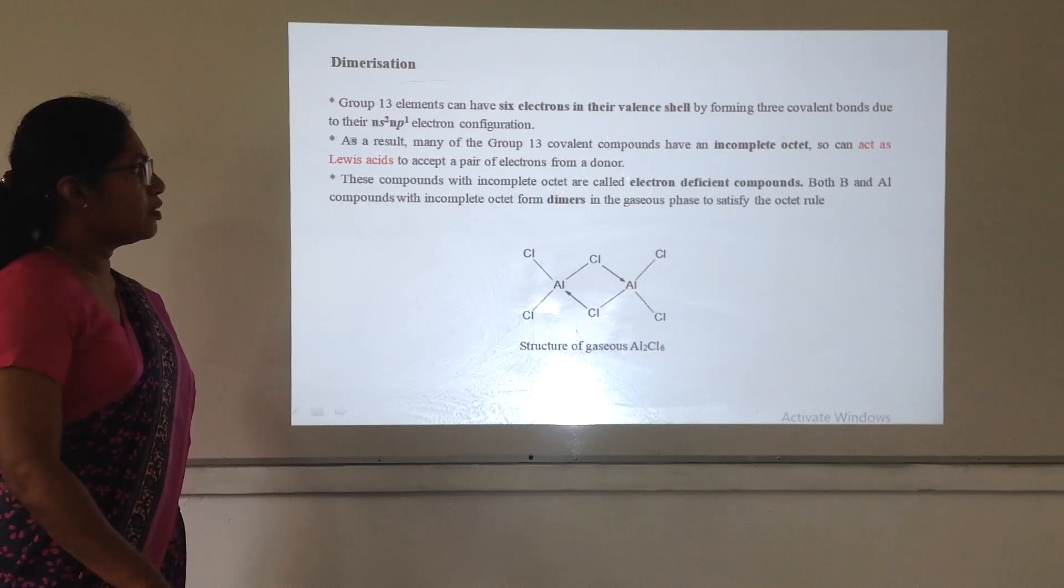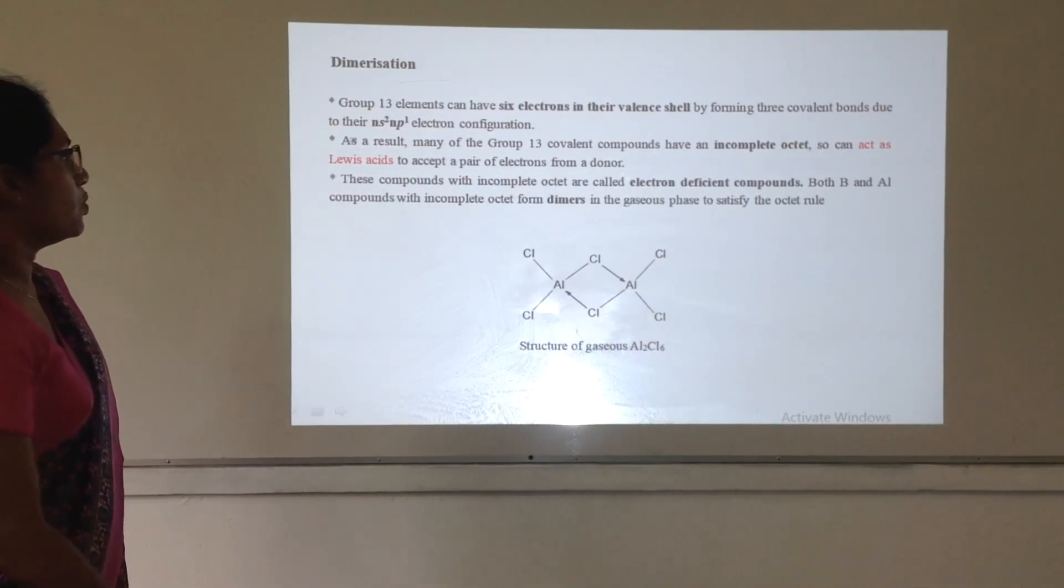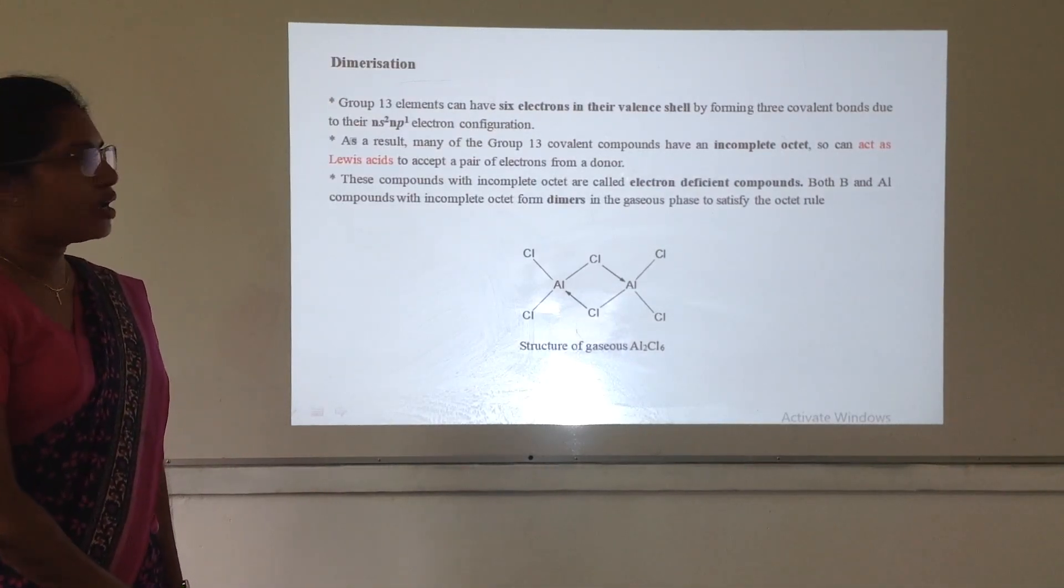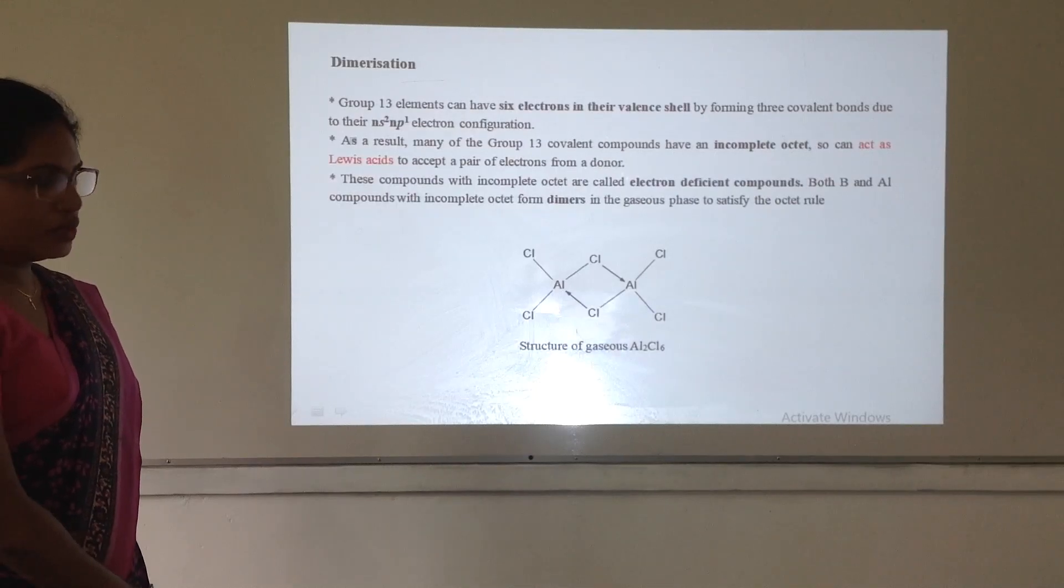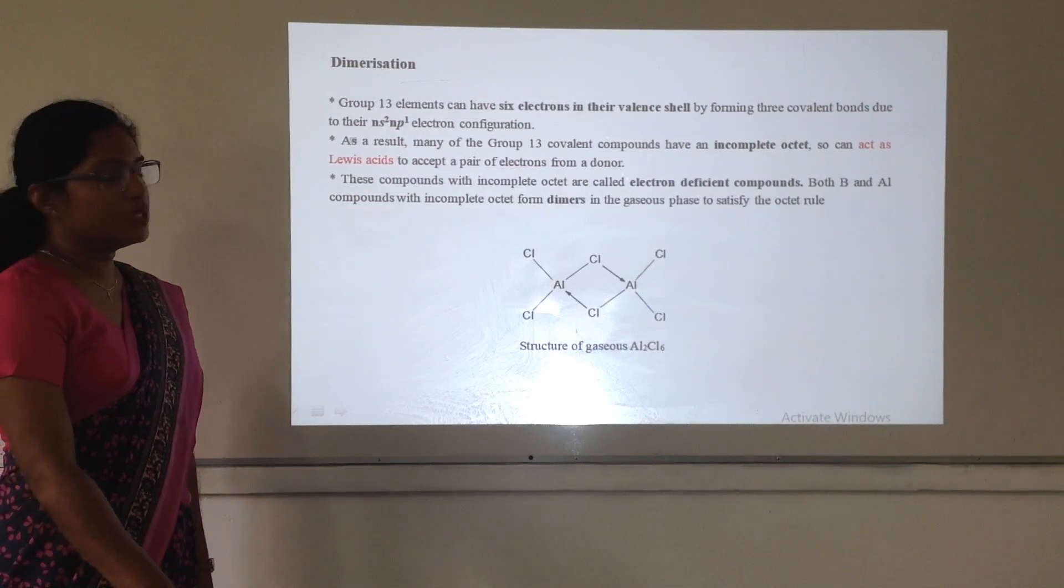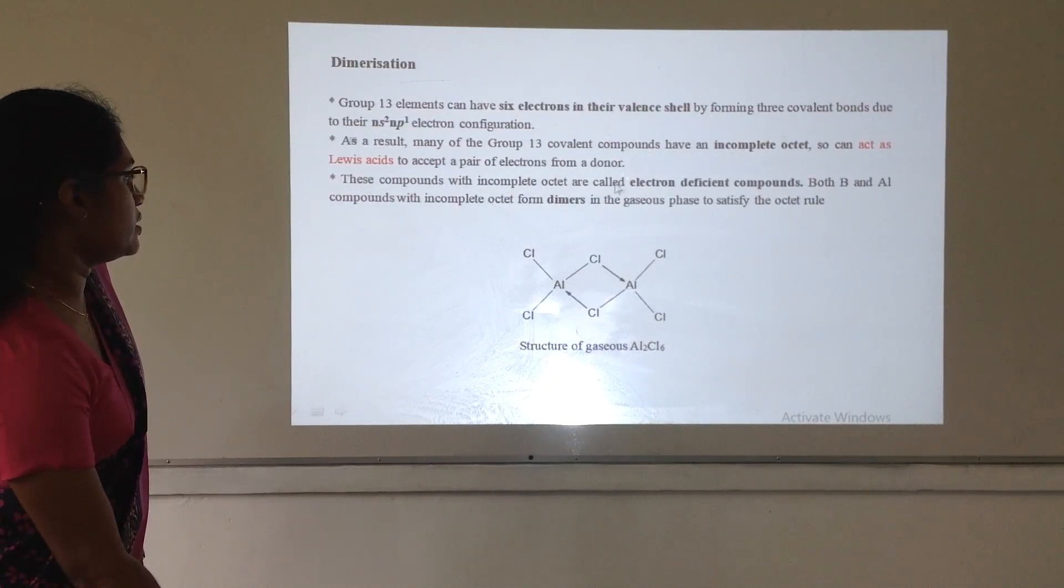So these compounds with incomplete octet are called electron deficient compounds and both boron and aluminium compounds tend to form dimers in their gaseous phase. You have to remember that carefully because they form these dimers in the gaseous phase not in the other phases. So this is the structure of dimer in aluminium chloride. In gaseous phase it forms this structure of dimer.